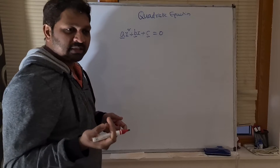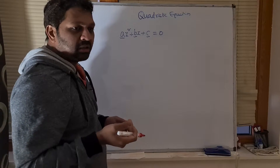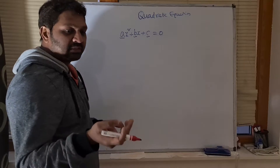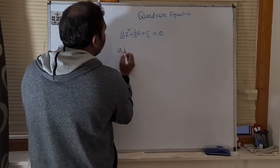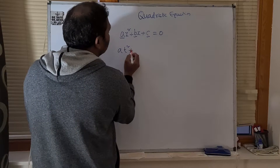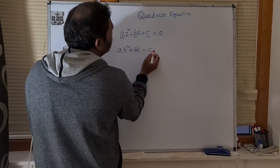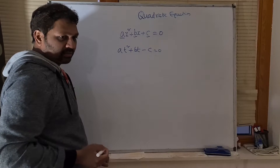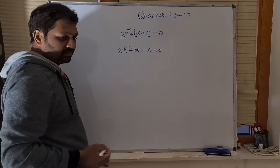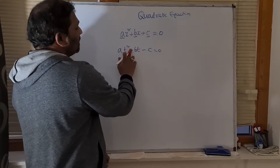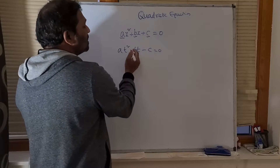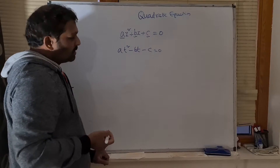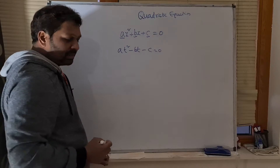You can also take the variable as Y, T, or something like that. For example, AT² + BT − C = 0 is also a quadratic equation. The symbols do not matter — it can be plus or minus. By looking at it, you should be able to tell what the variable is.